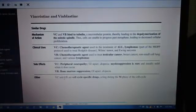Vincristine and vinblastine. The MOA: VC and VB bind to tubulin, a microtubular protein, thereby leading to the depolymerization of the mitotic spindle. Thus, cells are unable to progress past metaphase, leading to decreased cellular proliferation.